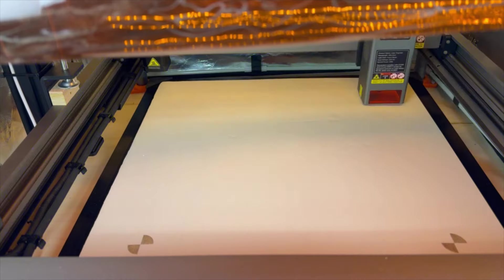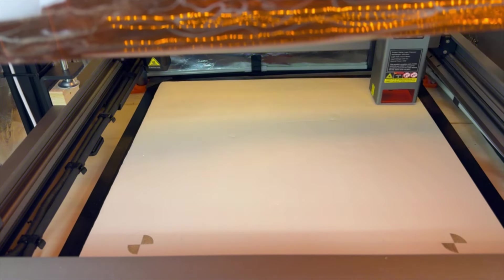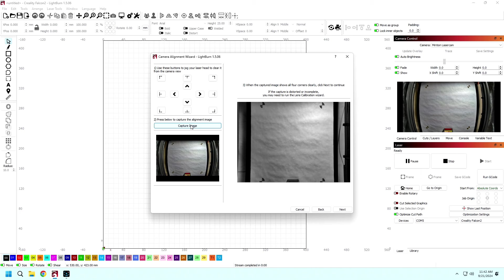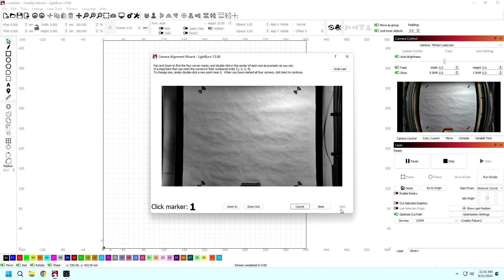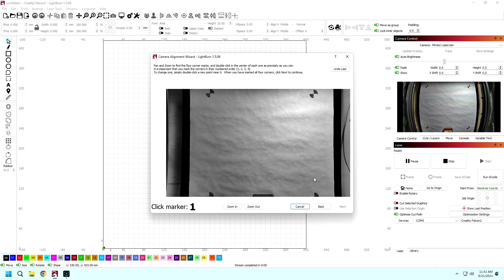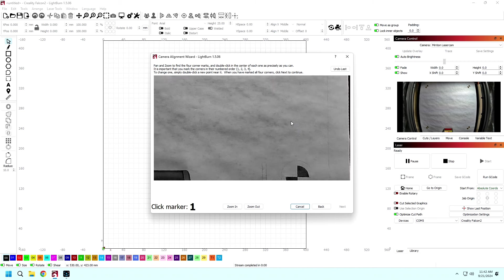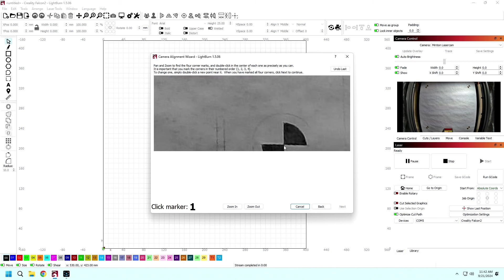Once the engraving is done, move the laser out of the way and click Capture Image. Ensure you can see all four targets in the image. If not, you will need to adjust the camera until you can see all four targets. If you do need to adjust the camera, then it's best to repeat the camera lens calibration before proceeding to the camera alignment calibration.